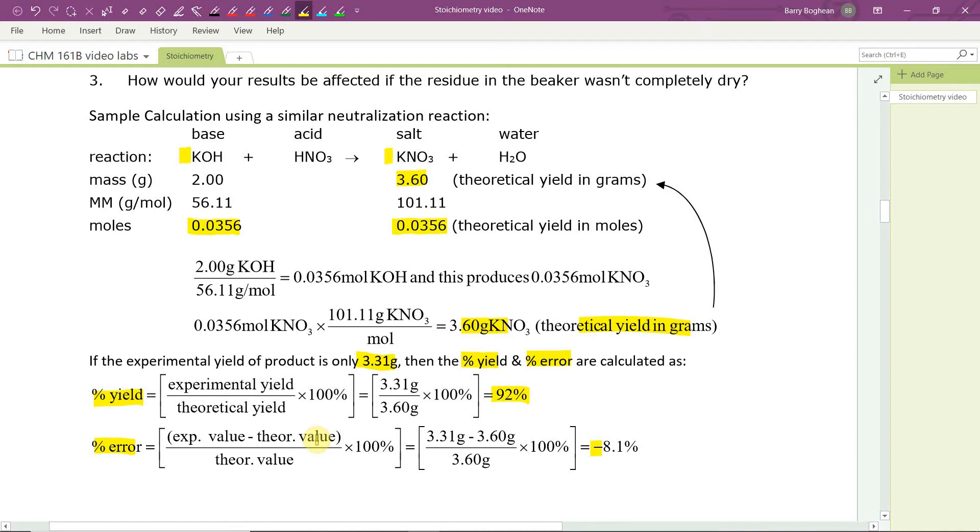Students sometimes also ask, do I divide by the measured or divide by the true? Once again, don't rely on memory. Think of what it means. When we calculate percentage error, we want to compare the accuracy, see how close or how far we are to the true value. Who cares how far or close we are to the incorrect value? What does that even mean? We want to compare to the true value, so you must divide by the true value.